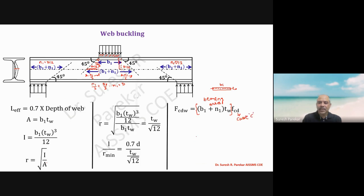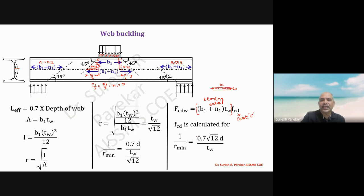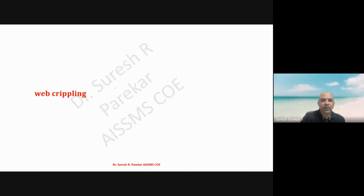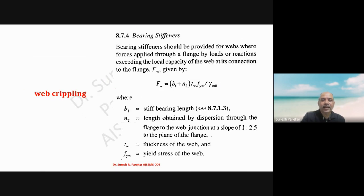Using curve C, we get the value of fcd. This fcd value — multiplied by the bearing area — should always be greater than the concentrated load if calculated at an intermediate point, and greater than the reaction if calculated at the support. This completes the web buckling check.